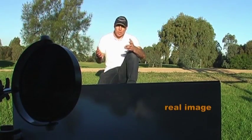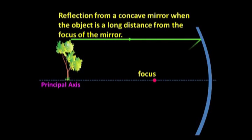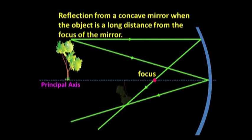the image produced is said to be real and can be projected onto a screen. This is the principle behind reflecting telescopes.